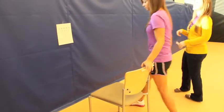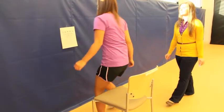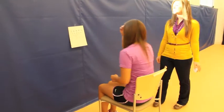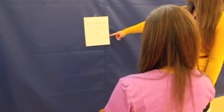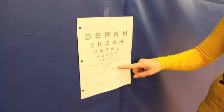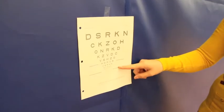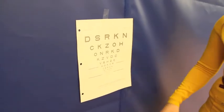One simple test we do here is called the dynamic visual acuity test. We have a patient read an eye chart down to the lowest line possible while still being able to read each letter in that line, then repeat the test while moving the patient's head side to side as they're reading.